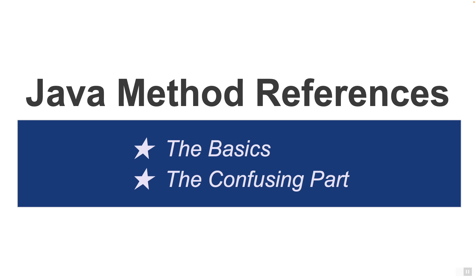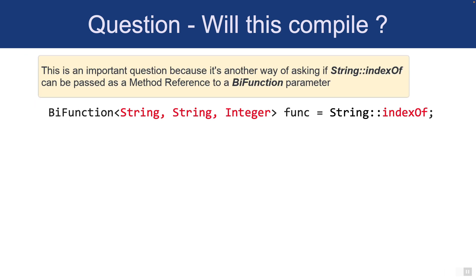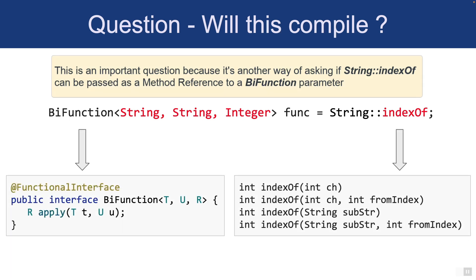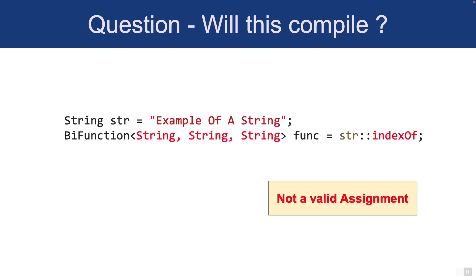In this lecture we are going to talk about method references — the basics, but also the confusing aspects. Let's start with a question: on the screen you will see String::indexOf being assigned to a BiFunction called func. The BiFunction takes two string parameters and outputs an integer, but the indexOf methods have different parameters. However, this code will compile.